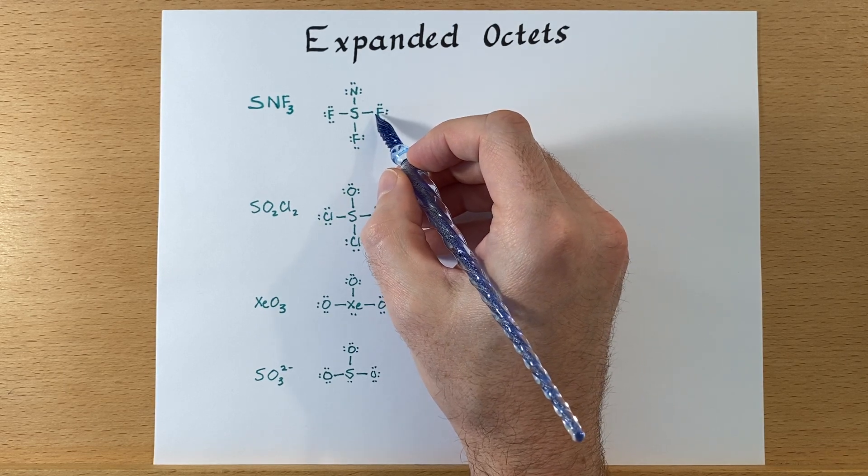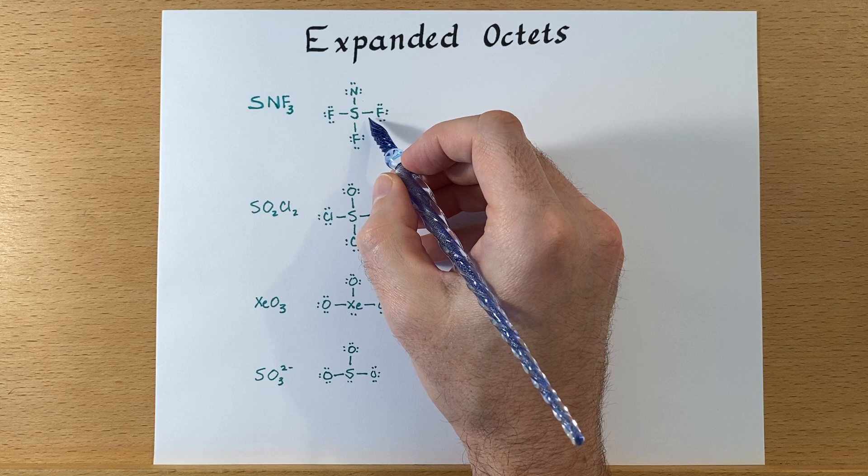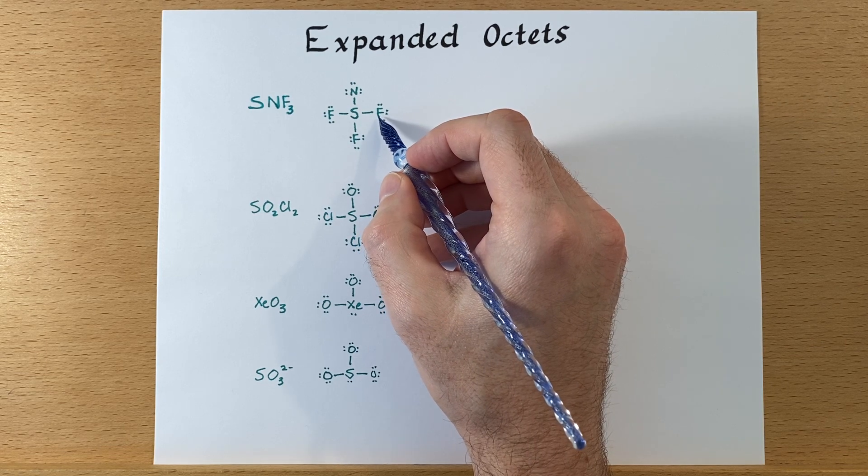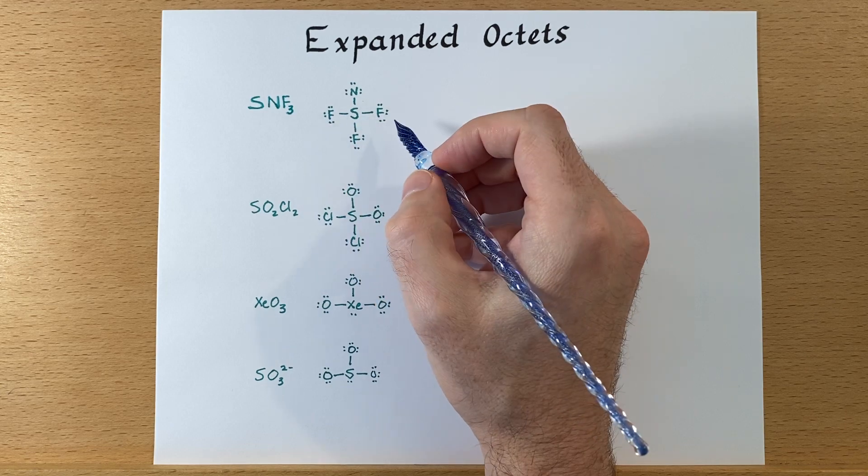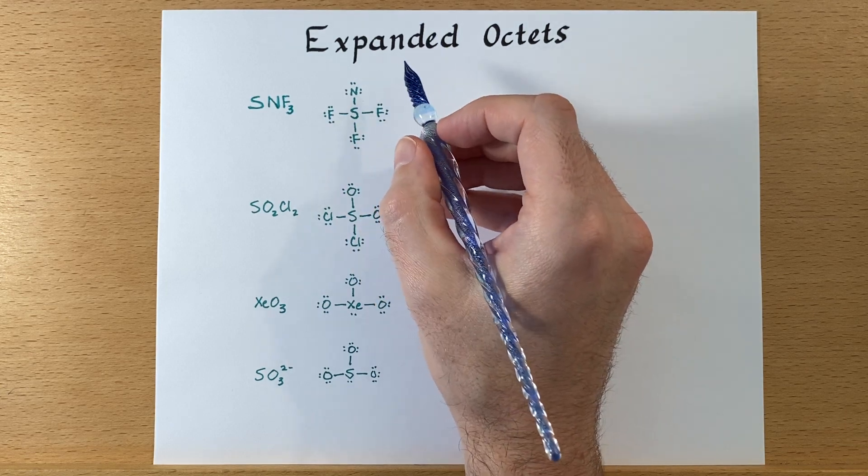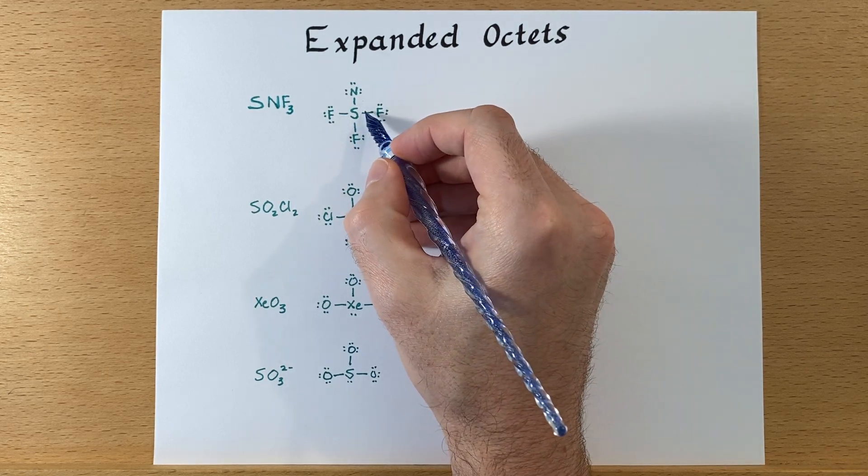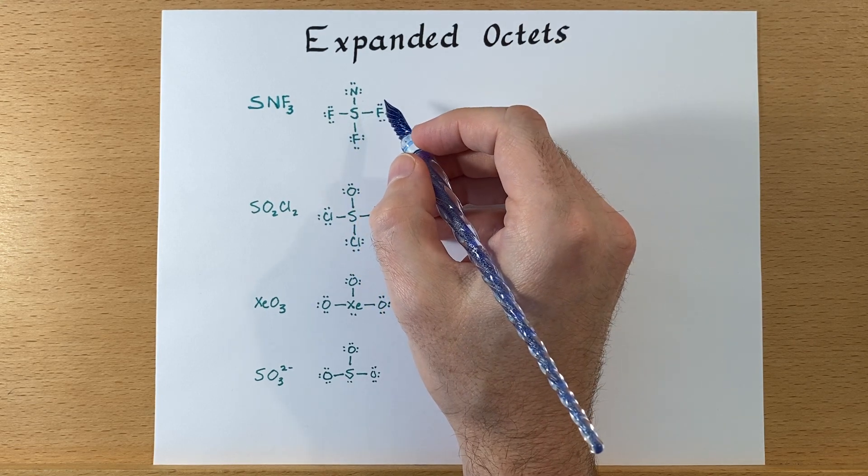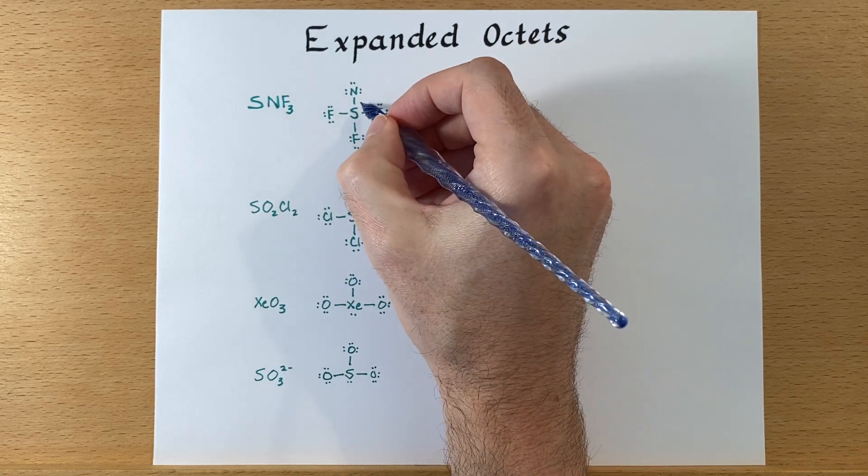For fluorine, this has seven electrons around it and it started with seven, so this formal charge is zero, zero, and zero there. Where we differ from that is sulfur. It's one, two, three, four, and it has six valence electrons. So this is a plus two.